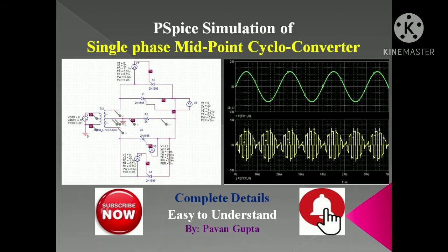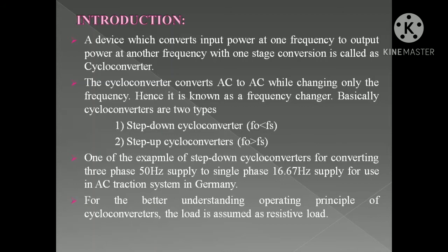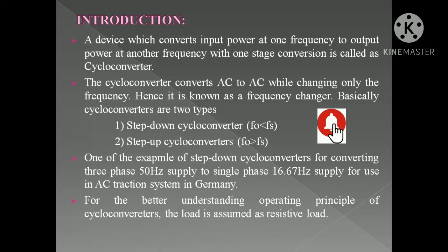Let me tell you a few basic things related to the cycloconverter before we move to the PSpice simulation. A device which can convert input power at one frequency to output power at another frequency with a one-stage conversion is called a cycloconverter. The cycloconverter converts AC to AC while changing only the frequency, hence it is also known as a frequency changer. Basically, cycloconverters are of two types: step-down cycloconverters, where output frequency is lesser than the supply frequency, and step-up cycloconverters, where output frequency is higher than the supply frequency.